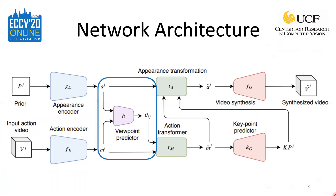The viewpoint predictor network uses the combined appearance and action encodings to estimate the angular viewpoint change between the input view and the novel view. The network consists of 2D convolutional blocks followed by a single fully connected layer that predicts the angular viewpoint change as a single value. There is a viewpoint prediction loss computed as the mean squared error between the ground truth and predicted angular change. The presence of this component makes it possible for the network to function without requiring the angular change to be given as an additional input.